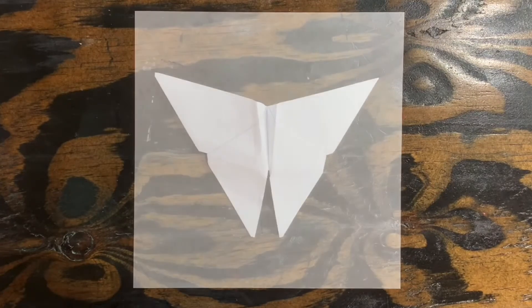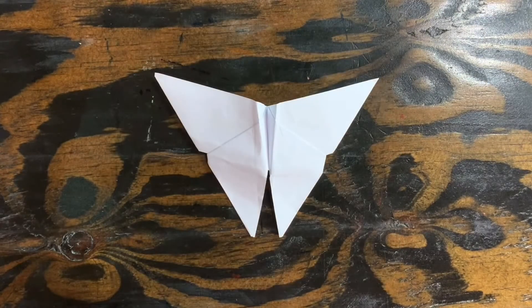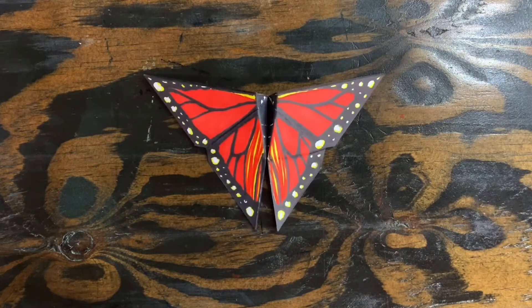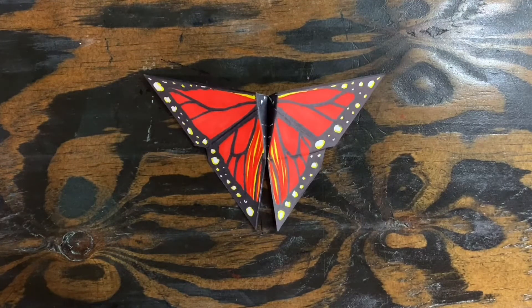Today we're going to turn this white piece of paper into an origami butterfly and then we're going to decorate that origami butterfly with a colorful realistic design.